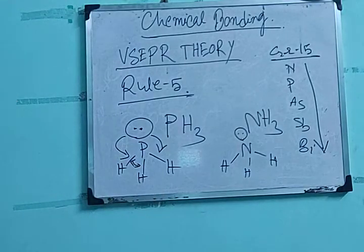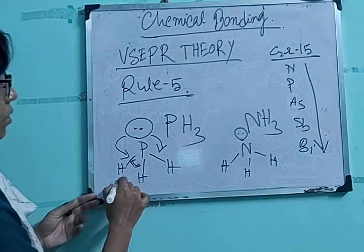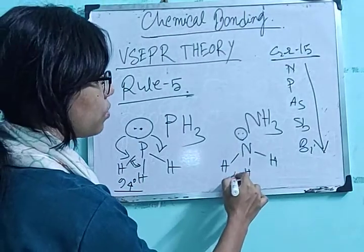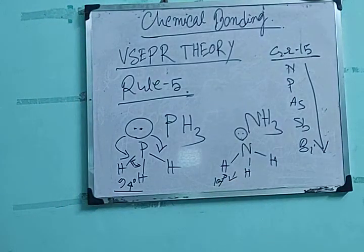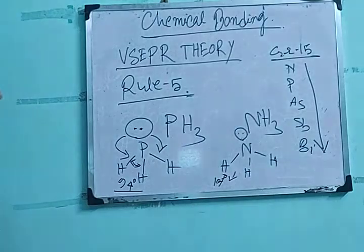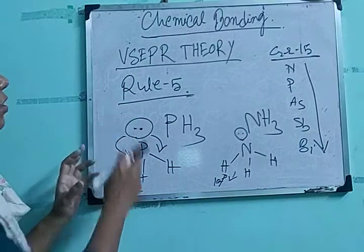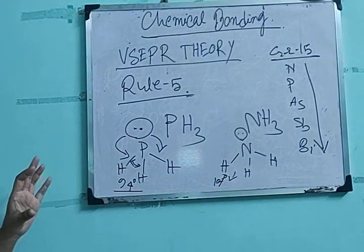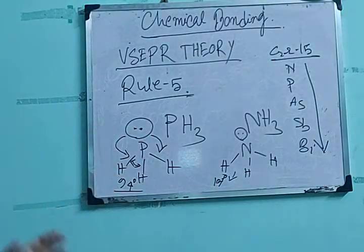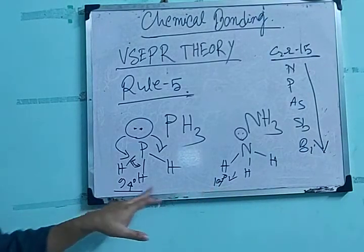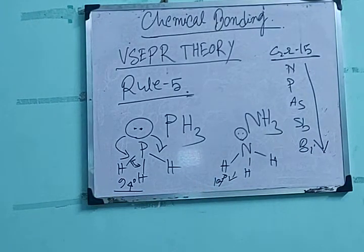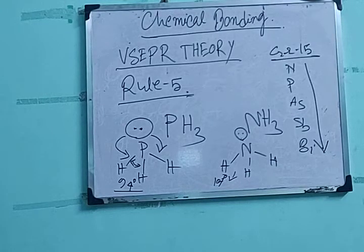In PH3, the bond angle is 94°, which is very low. In ammonia, it is 107°. Both are tetrahedral — the geometries are the same, both are tetrahedral. Ammonia is 107°, somewhat lower than 109° due to lone pair–lone pair repulsion. But with the same geometry and both being group 15 elements, the bond angle in PH3 is 94° because the space occupation of the lone pair of electrons is higher, imparting more repulsion and squeezing the bond angle to 94°. In this way, you can compare bond angles by comparing the size and incomplete valence shell of the central atoms.